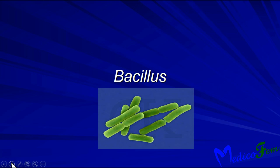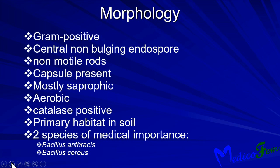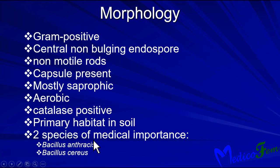The second genus is Bacillus, which are also gram-positive rods. They have central non-bulging endospores, are mostly non-motile, have capsules, and are mostly saprophytes. They are aerobic and have catalase enzyme. They are primarily found in soil. Two species of medical importance are Bacillus anthracis and Bacillus cereus.